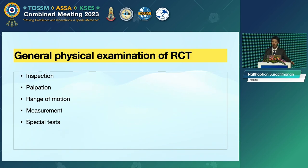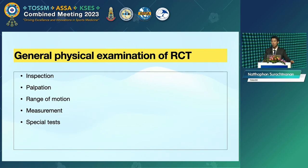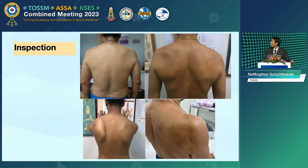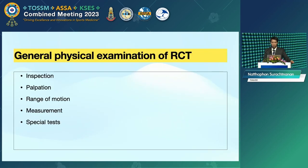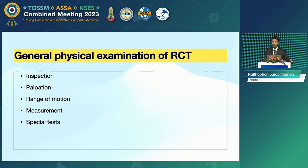As you know about physical examination in general orthopedics, we start from inspection, palpation, range of motion, then assess motor power and special tests. That is also the same for the shoulder exam.